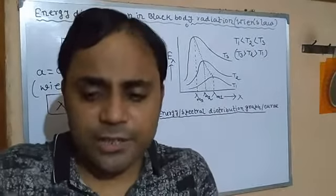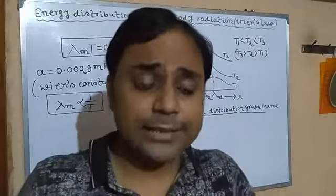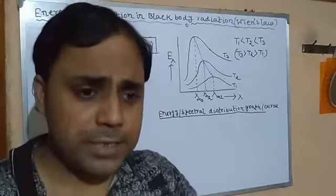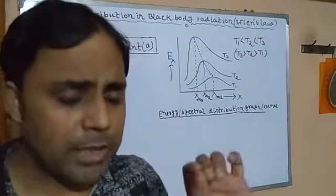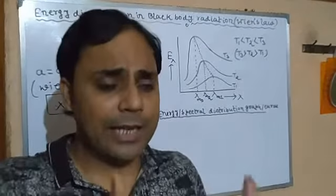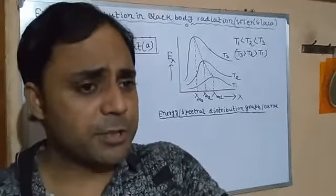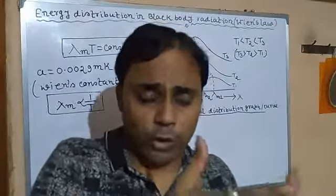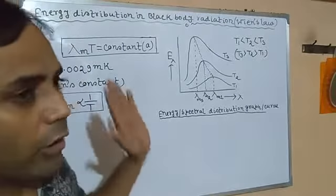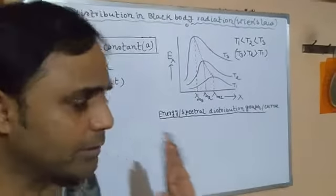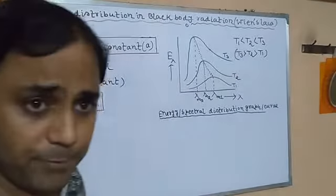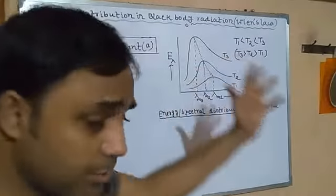The intensity of radiant heat energy is different for different wavelengths in black body radiation. This was first studied by two physicists, Lumer and Pringsheim. They experimentally took a black body, heated it at different temperatures, and saw that the energy was distributed non-uniformly among different wavelengths at different temperatures. From this experiment they derived a graph called the energy distribution graph or curve.